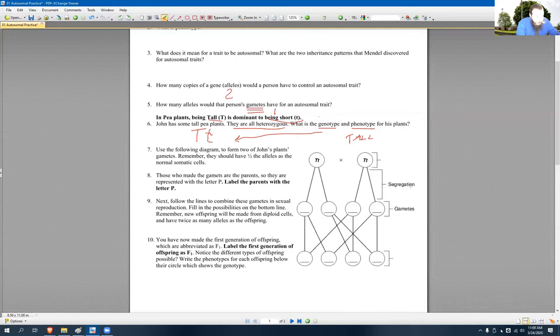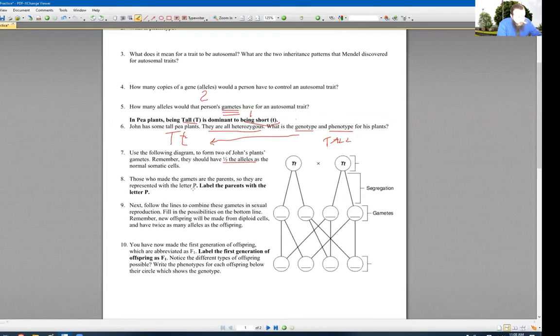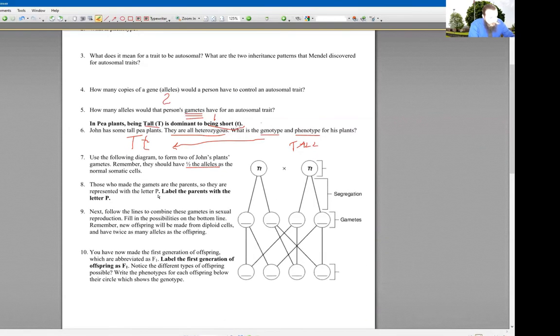And when we make the gametes, we're only going to have half the alleles, just like we set up here, right? Right. So the first thing we do, we got to label the parents with a P, because that's how we label them in genetics problems. These two plants, guess what they are? The P? Yeah. And so this bracket over here, let's just label that as P.